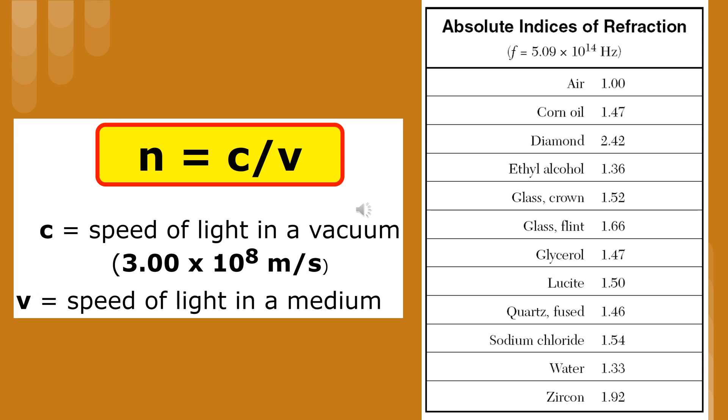We see from the equation that the index of refraction and velocity have an inverse relationship. The fastest medium listed in the chart on the right is air, and the slowest with the largest index of refraction is diamond. Notice that the index of refraction is a unitless number. Since meters per second is on the top and the bottom, they cancel out.